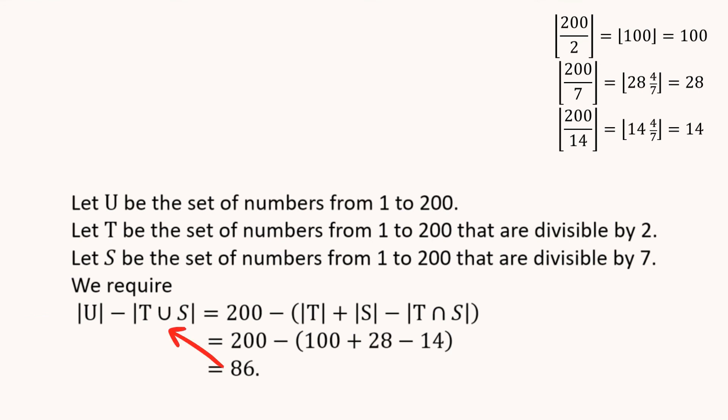Now we're going to take off the union of T and S. And to do that, I use the inclusion-exclusion principle formula. So it's the number of T plus the number in the set S minus the number in the set which is the intersection of T and S.